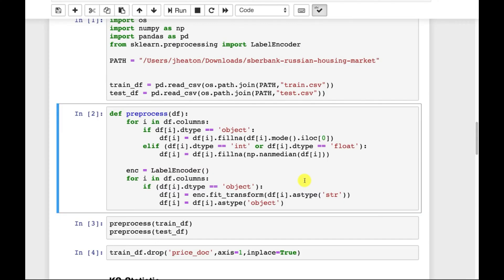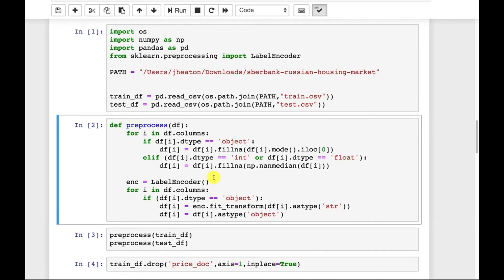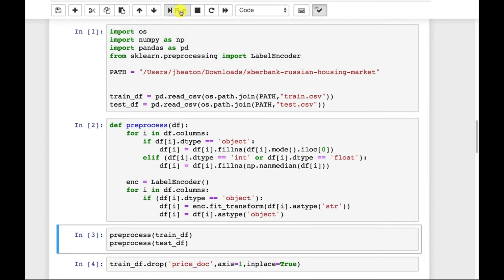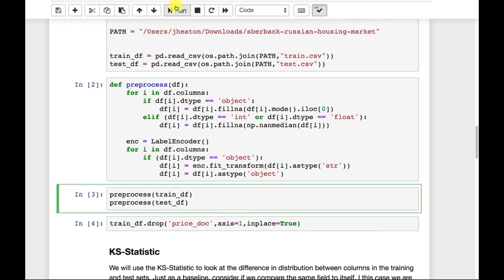I won't get into why that was actually chosen, but these were the common encodings that were used in this particular competition. I believe they shied away from dummies because there were simply too many dimensions. So we'll run this so those two functions are defined, or that one function is defined. And then we'll preprocess the data. We're going to drop the target because we're not trying to predict at this point.